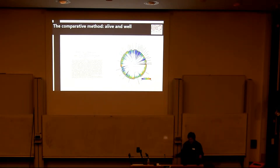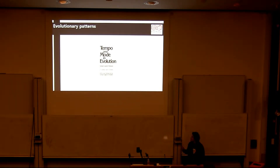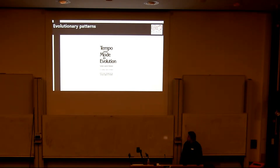But a slight irony about this is that the vast majority of these methods have used extant phylogenies only, and a lot of the original understanding and the hypotheses we test came from things like the tempo and mode in evolution by George Gaylord Simpson, which used examples from the fossil record.